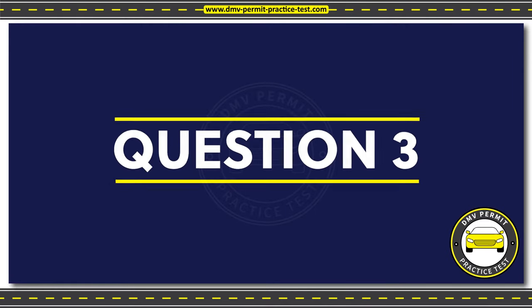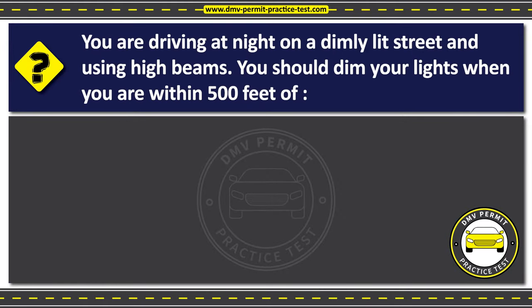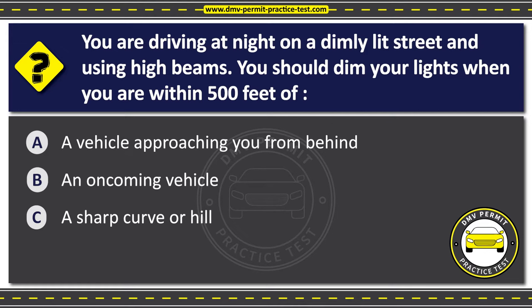Question 3. You are driving at night on a dimly lit street and using high beams. You should dim your lights when you are within 500 feet of: Option A: A vehicle approaching you from behind. Option B: An oncoming vehicle. Option C: A sharp curve or hill. The correct answer is Option B: An oncoming vehicle. You should dim your high beam headlights to low beams when within 500 feet of an oncoming vehicle, because high beam headlights can be blinding and cause a temporary loss of vision.